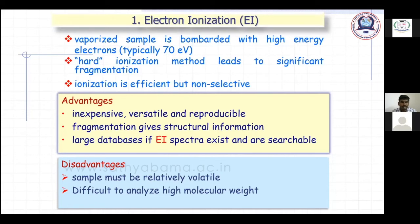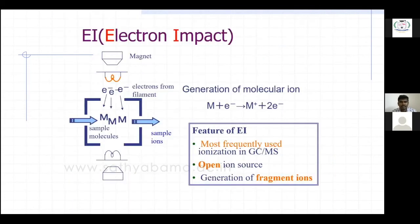The disadvantages of EI are that the sample must be relatively volatile and it is difficult to analyze high molecular weight compounds. For this reason, LC-MS is used when high molecular weight or non-volatile compounds need to be analyzed. Graphically, in EI, the sample molecule enters and a filament generates electrons. The sample gets ionized, and this is the most commonly used ionization method in GC-MS.